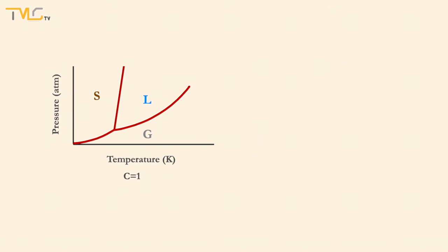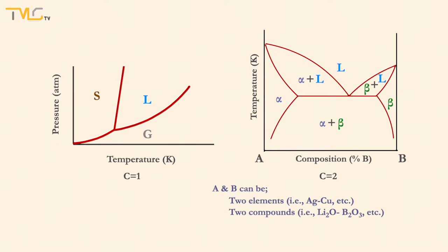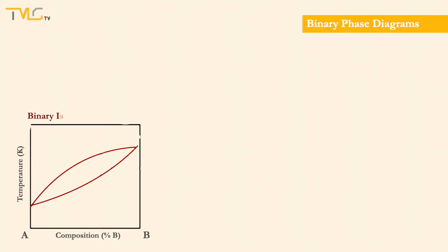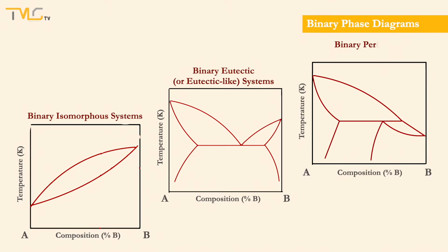Unlike unary phase diagrams, we deal with two substances in binary phase diagrams. This substance couple can be two elements, two compounds, or one element and one compound. Binary phase diagrams can be divided into three main classes: binary isomorphous systems, binary eutectic or eutectic-like systems, and binary peritectic or peritectic-like systems.